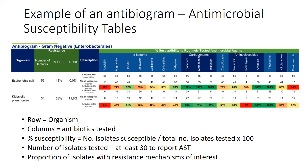Under the resistance tab, we also have percentage ESBL and percentage CRE. We include resistance mechanisms of interest — for the Enterobacterales, this means what percentage of isolates are extended-spectrum beta-lactamase producers and what percentage are carbapenem-resistant. Looking at the Klebsiella in this setting, we have a 53% ESBL rate and an 11.8% CRE rate, giving a snapshot of the common resistance mechanisms in the unit.